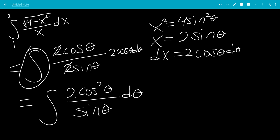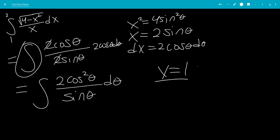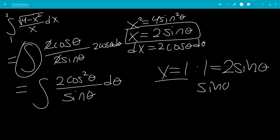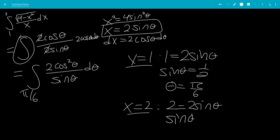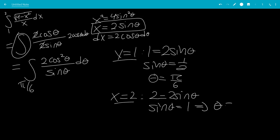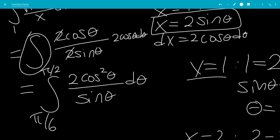Now let's find the new bounds. When x equals 1: 1 equals 2 sine theta, so sine theta equals 1/2, giving theta equals pi over 6 (30 degrees). When x equals 2: 2 equals 2 sine theta, so sine theta equals 1, giving theta equals pi over 2 radians. So the bounds go from pi over 6 to pi over 2.